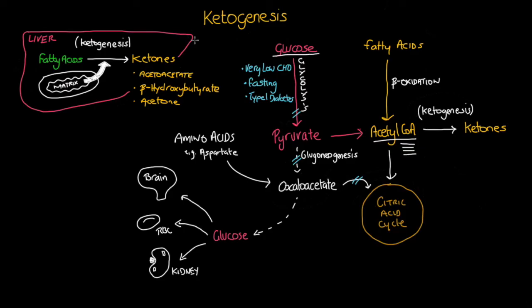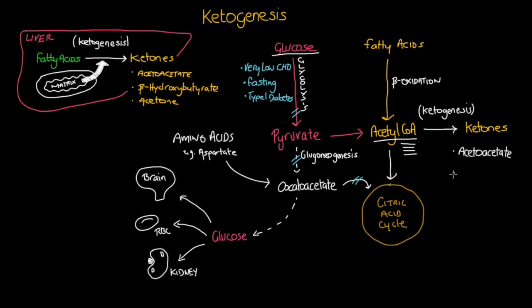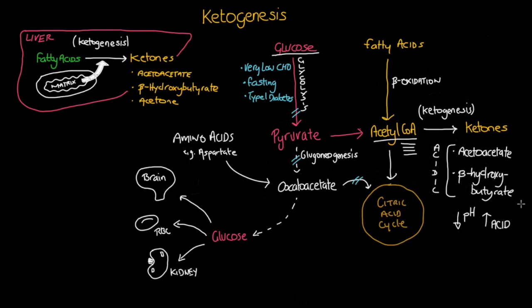This in turn leads to the subsequent buildup of ketones within the body. Some of these ketones are acidic, which can lead to a drop in blood pH, causing a buildup in acid. While not life-threatening for individuals with normal functioning carbohydrate metabolism, it does become a major issue for insulin-dependent diabetics, which have lost the ability to produce insulin from the pancreas.